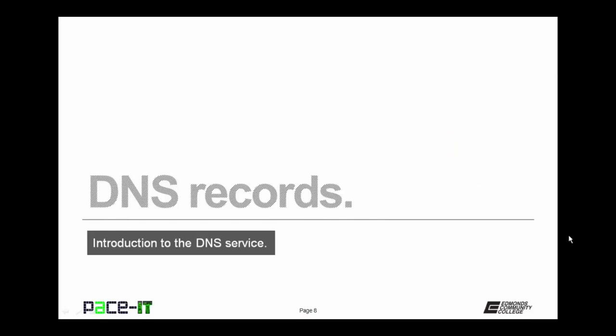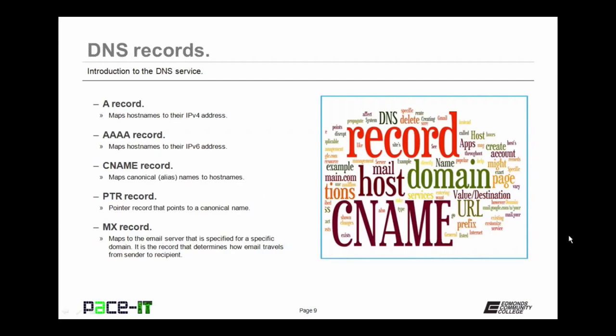Now let's move on to the various DNS record types. The first record is the A record. The A record maps host names or FQDNs to their respective IPv4 addresses. Closely associated with the A record is the AAAA record — the quad-A record — which maps the FQDN to its respective IPv6 address. Then there's the CNAME record, which maps a canonical name, or alias, to a host name.